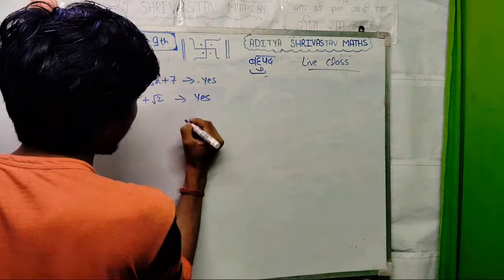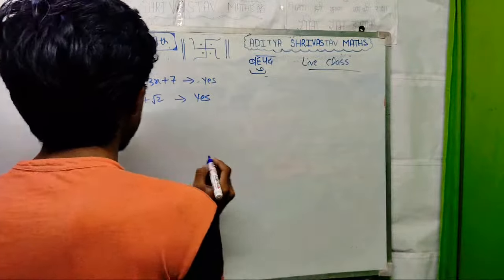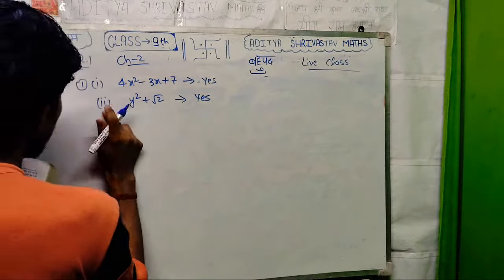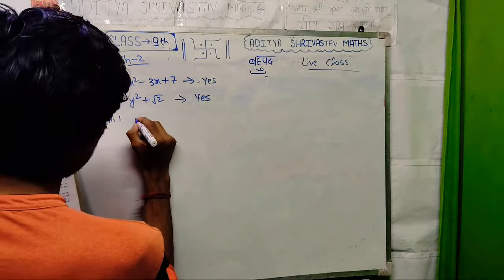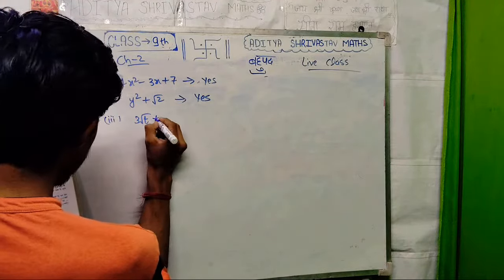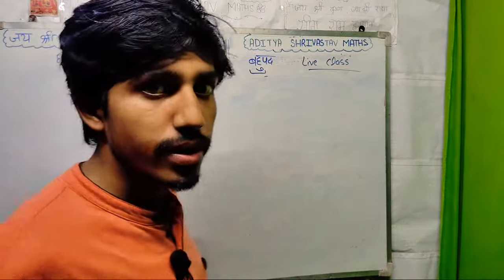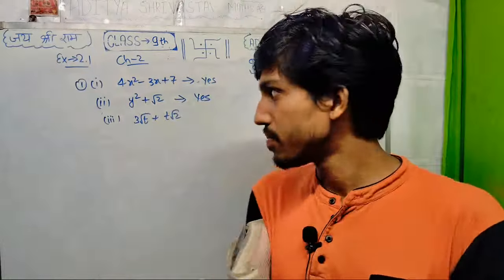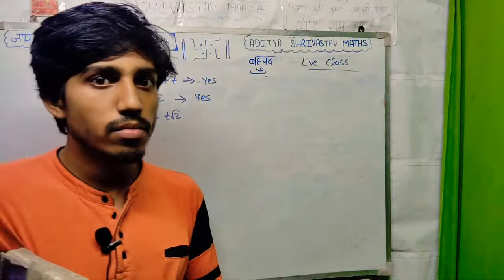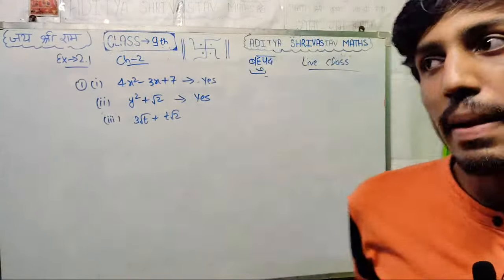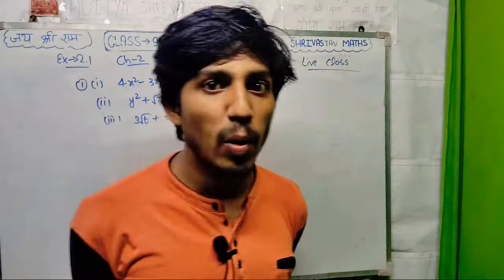Okay? If you show more than one variable, then it is not. You are showing only y here, and only y here. So you are showing only y. The next question is 3 root t plus t root 2. Is this one variable? Please tell me — yes or no? First, there is no problem.